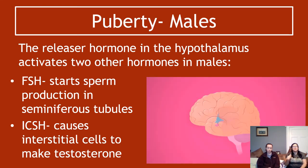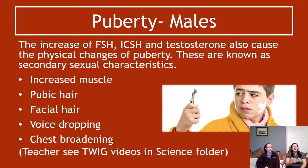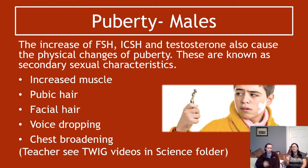The releaser hormone triggers sperm production and testosterone production. The increase of FSH, ICSH, and testosterone also cause the physical changes of puberty, known as secondary sexual characteristics. These are not about actual sperm production but other characteristics that indicate sex — things like increased muscle, pubic hair, facial hair, the voice dropping, and chest broadening. All of these are secondary sexual characteristics in males.